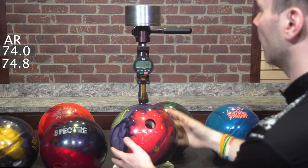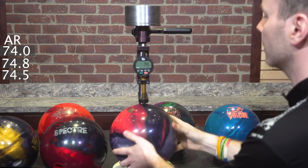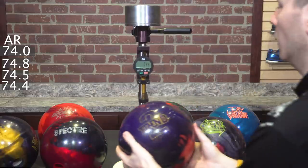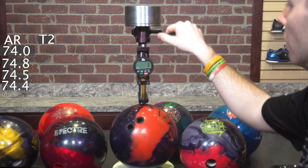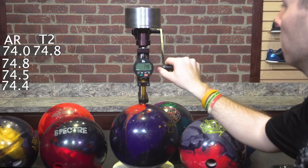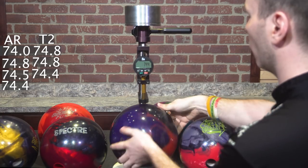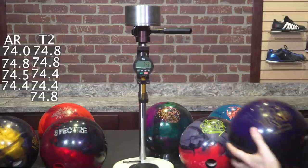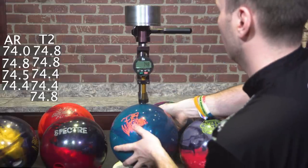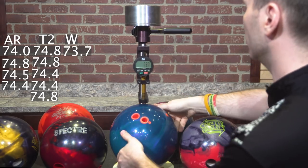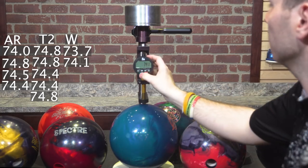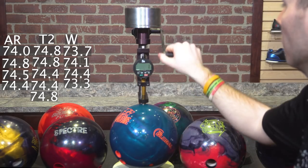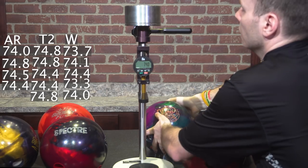74, 74.8, and we're just going to check each of these balls roughly five times. You can see not one measurement under 74 on the Altered Reality. We'll take a customer exchanged Trend 2: 74.8, 74.8, 74.4, 74.4, and 74.8. We'll take a look at a Wolverine: 73.7, 74.1, 74.4, 73.3, 74.0.